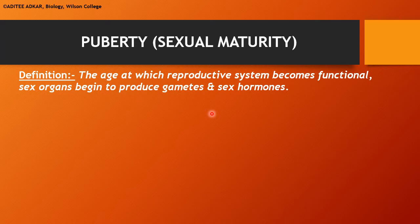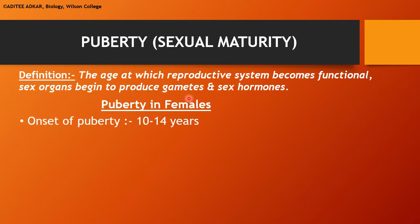Let us begin by understanding what is puberty or sexual maturity. Puberty is the age at which the reproductive system becomes functional. The gonads or sex organs start producing gametes and the secretion of sex hormones begins. Puberty starts in females by the age of 10 to 14 years and is a little late in males, starting around 12 to 15 years of age.